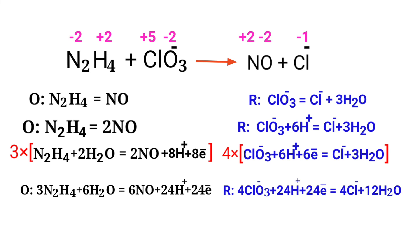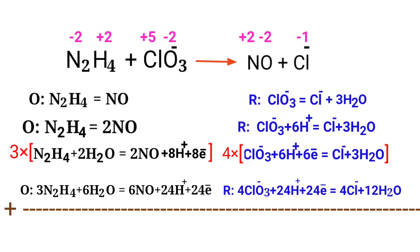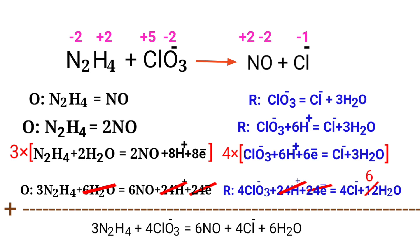Now add both half reactions together and cancel the same terms appearing on both sides. The equation is now fully balanced in an acidic medium.